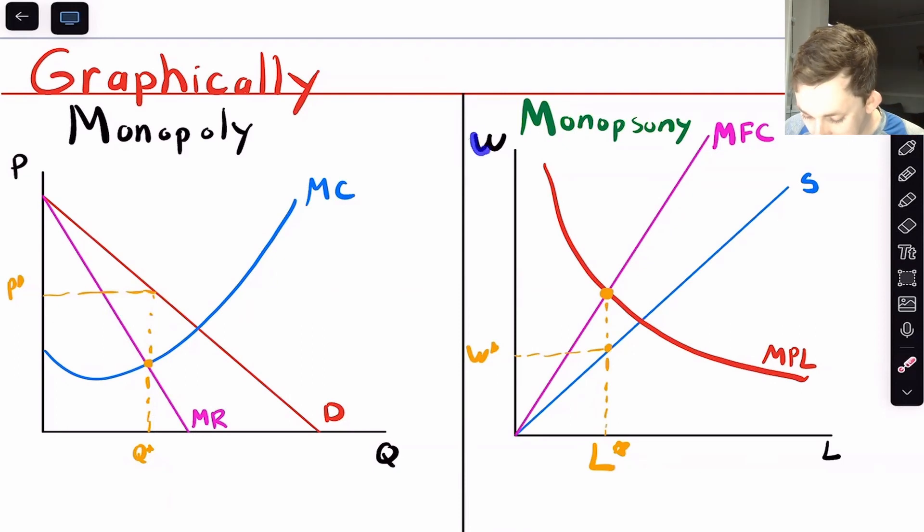So here's a wage market, a labor market. Here's wage and here's the number of Leonas, the number of workers that we're hiring. Here's the marginal product of labor that looks like this, and then here's our supply curve that looks like this.